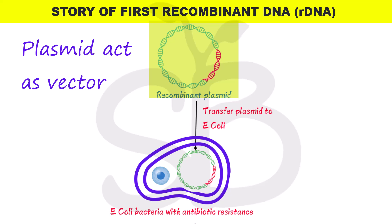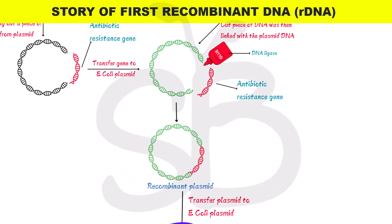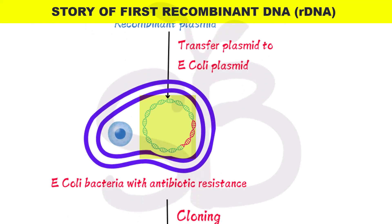The plasmid is used as a vector. The vector carries the gene into the host. This type of bacteria is used as a vector, and this type of bacteria is also associated with hemoglobin.